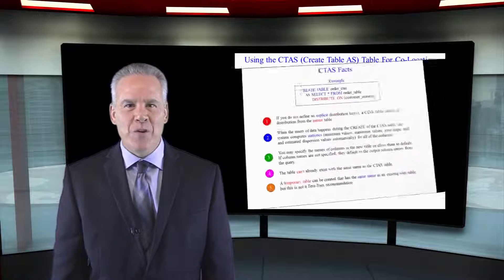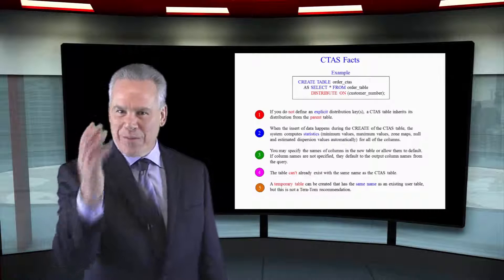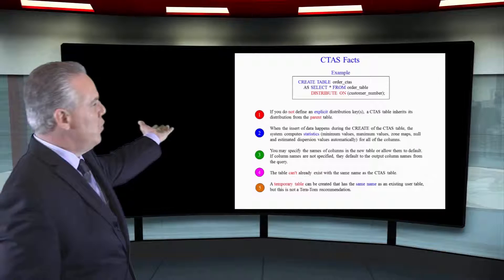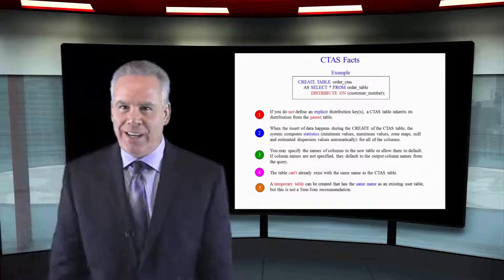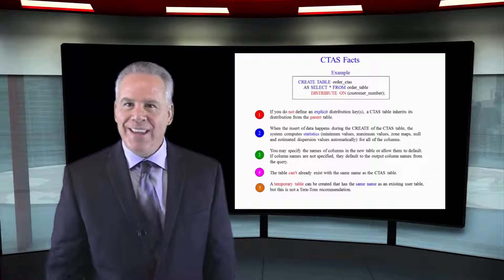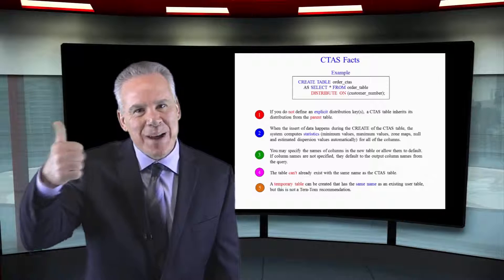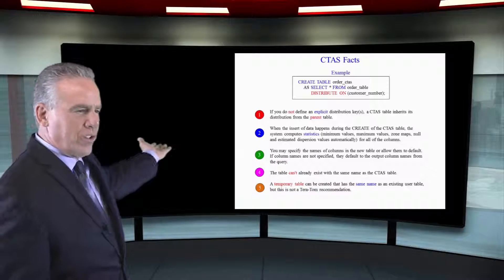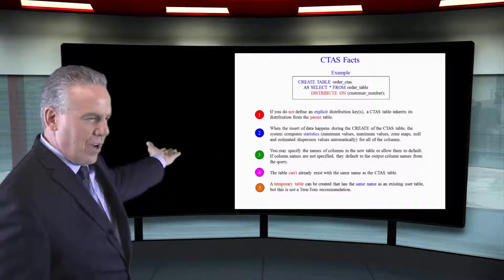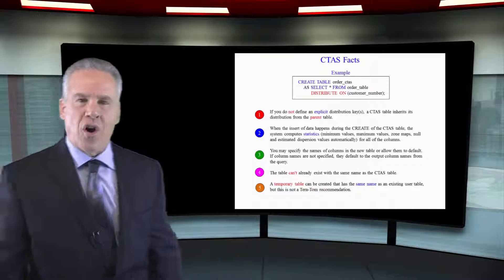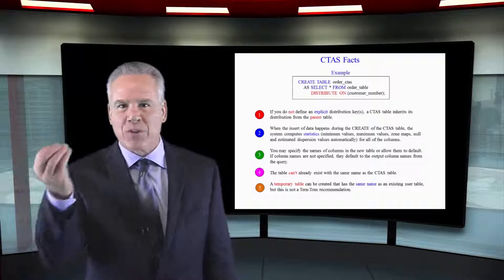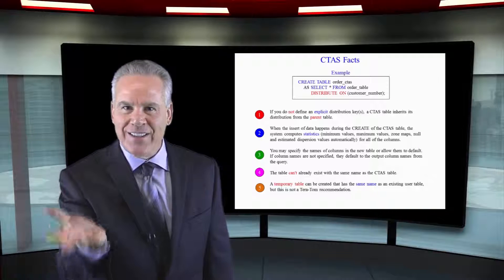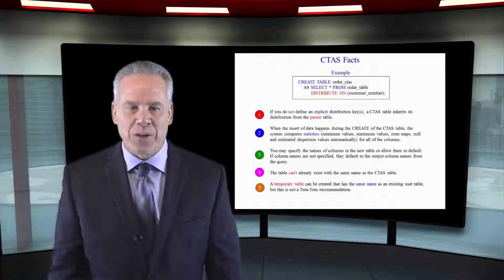Everything you wanted to know about CTOS, but were afraid to ask. First and foremost, if you do not define a distribution key on a CTOS table, it's going to inherit it from its mom or dad, from the previous table you created it from. As you can see, when the insert of the data happens, statistics are collected. Zone maps are automatically hit with their min and max, so everything's done so the CTOS is fully ready.